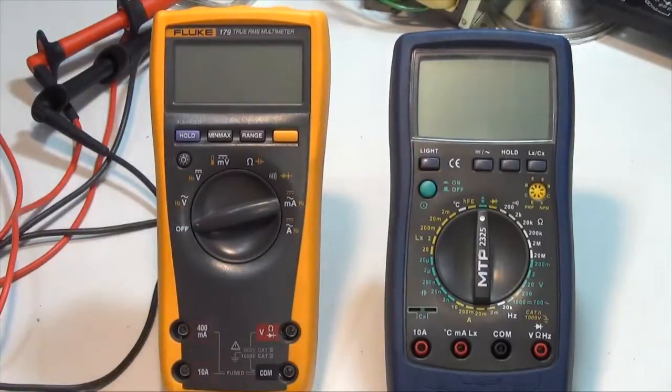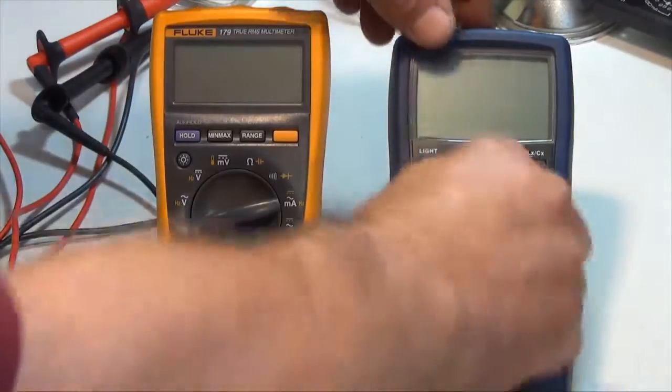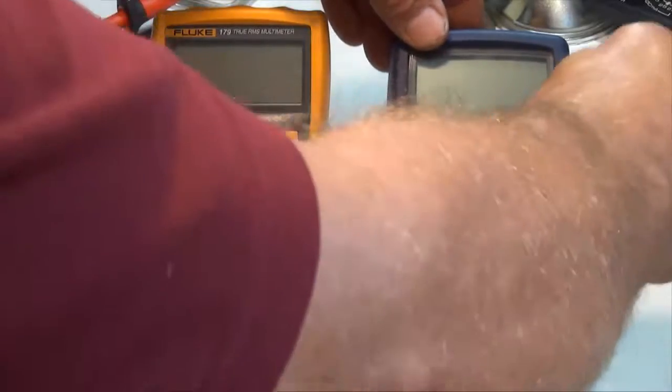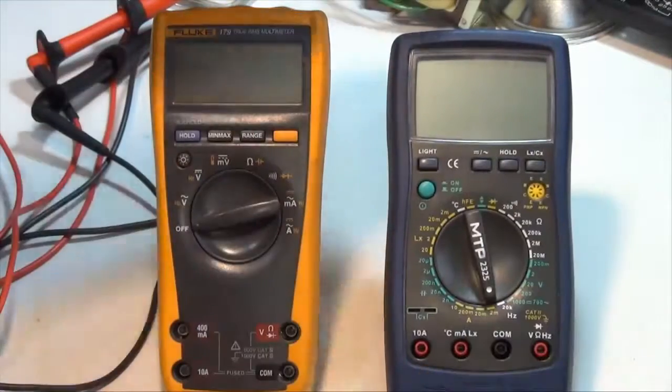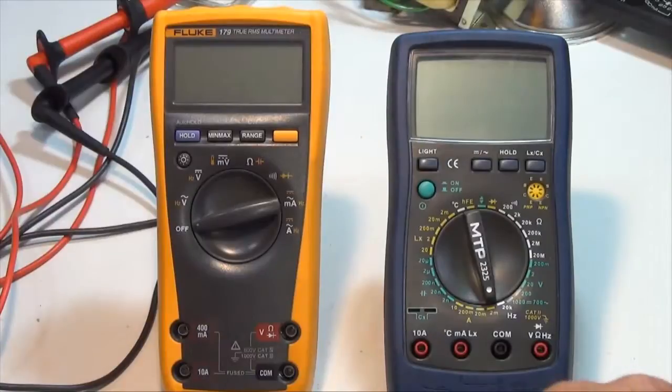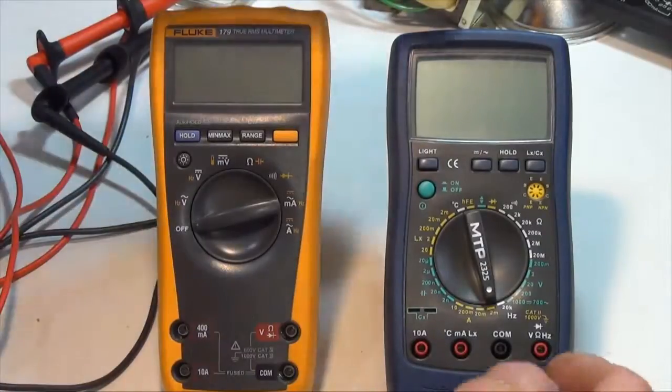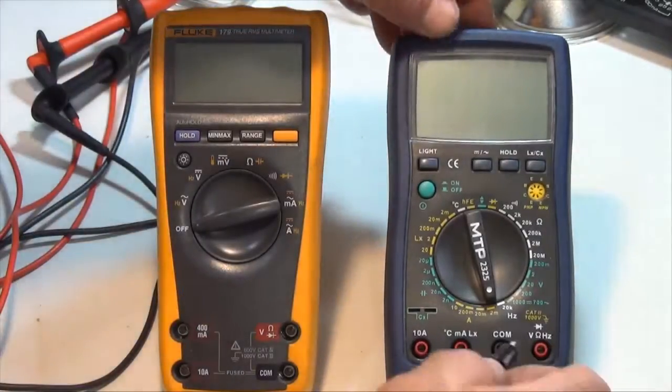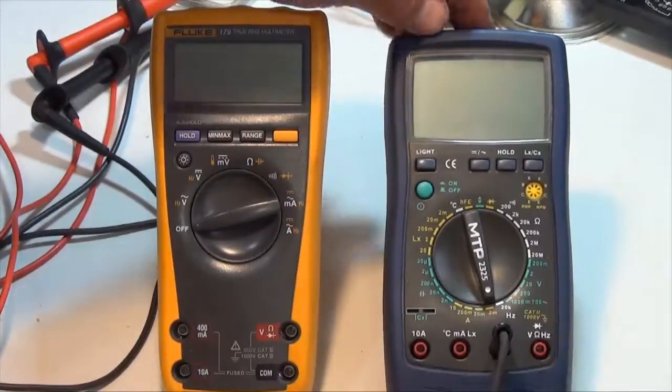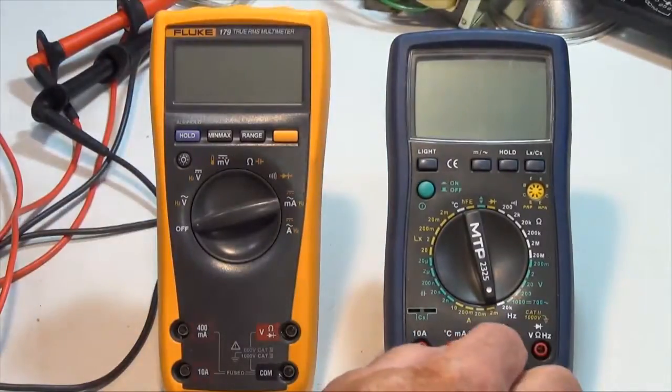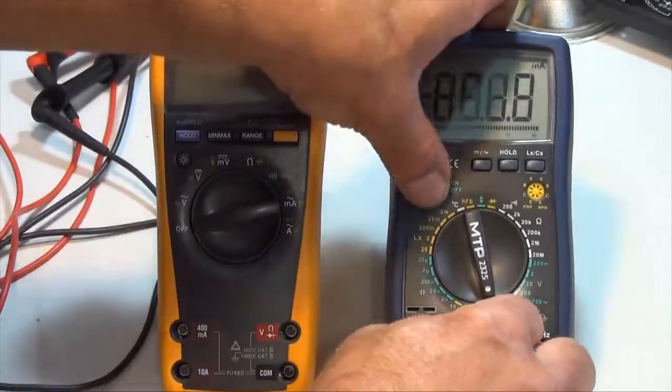So the MTP meter here, I will set it up to go to the 200 milliamp range. So I will use my meter leads. I've already checked my meter leads. I know they're good. So black into the common and red into the milliamp jack. And I'll turn the meter on.